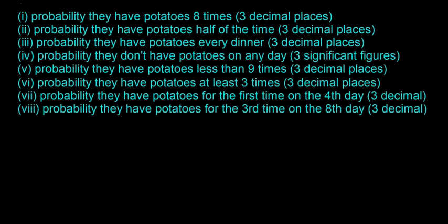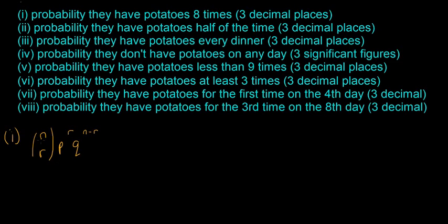So the first one is the probability that they have potatoes 8 times. First I'll just quickly write out the formula. So there we go, it's n choose r times p to the power of r times q to the power of n minus r. So I'll write each one of these out. n is equal to 10, they have dinner 10 times. The number of times they have potatoes, that's going to be a success. And in this question r is equal to 8. p is going to be equal to 0.7, that's the probability of potatoes. And q is going to be equal to 0.3.